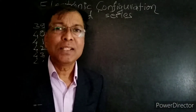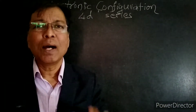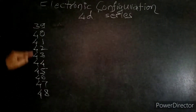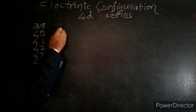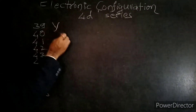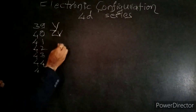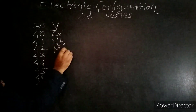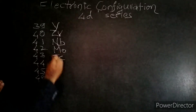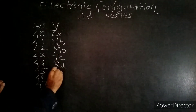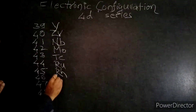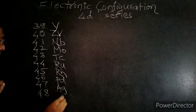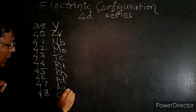This is the 4D series electronic configuration. The 4D series has atomic numbers 39 to 48. The elements are: Yttrium, Zirconium, Niobium, Molybdenum, Technetium, Ruthenium, Rhodium, Palladium, Silver, and Cadmium.